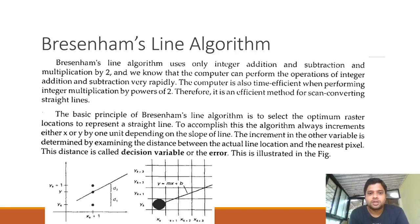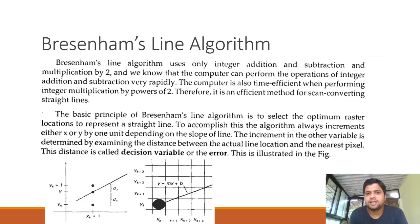Bresenham's line algorithm is fairly simple but is based on DDA line algorithm's drawbacks. In the last lecture we saw that DDA line algorithm has a division operation, which is why the algorithm is slightly time-consuming and involves unnecessarily more calculations. To overcome these drawbacks, Bresenham's line algorithm is the best choice.